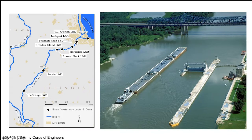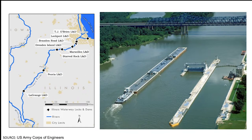The Peoria lock and dam and the LaGrange lock and dam are different from the rest — they're wicket dams. Large panels at the bottom of the river get tipped up to hold back water during low water periods. During high water periods the river is free-flowing, so unlike some other systems where fish passage is greatly hindered, during high water fish passage is obviously free.